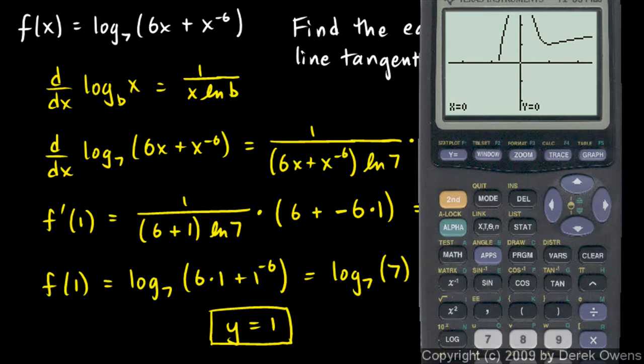We can hit trace and type in 1. And at x equals 1, the function does have a value of 1. And it looks like it might have a slope of 0 there too, like we found.